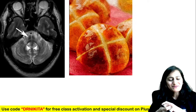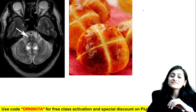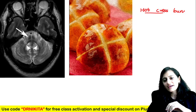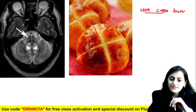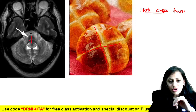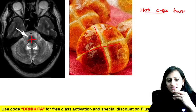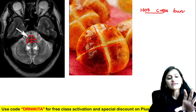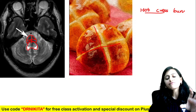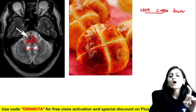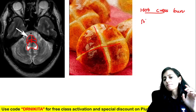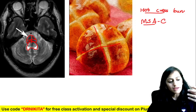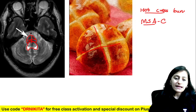This is the hot cross bun sign — you see a cross appearance in the pons. I call it pons because behind it I'm seeing the cerebellum and fourth ventricle. Hot cross bun sign is seen with multiple system atrophy cerebellar type — MSA-C.